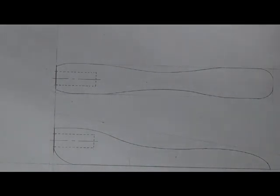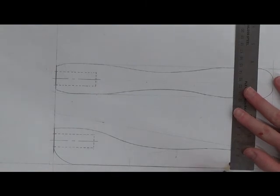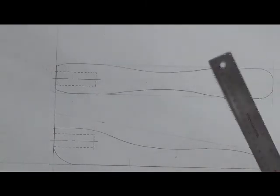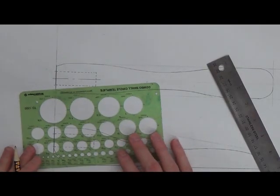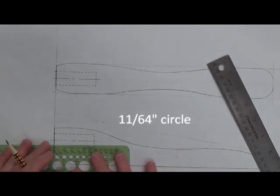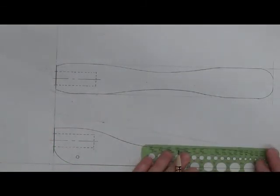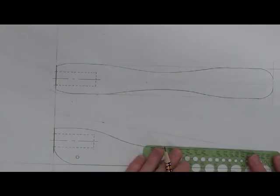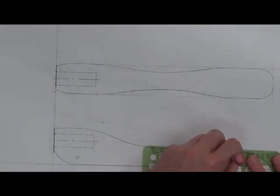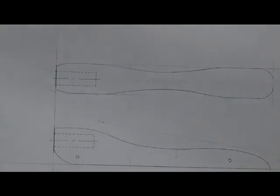So I'm going to take a ruler and measure up eight centimeters, put a mark. Maybe I'll put my other hole here, eight centimeters, put a mark. And then we're going to be using 11/64 drill bits. So I'm going to find the 11/64 circle template. And draw a circle there. And a circle there. Again, I want the bottom of the axle hole to be eight centimeters above the bottom of the car. Could be as little as five, could be as much as 10. I recommend eight.